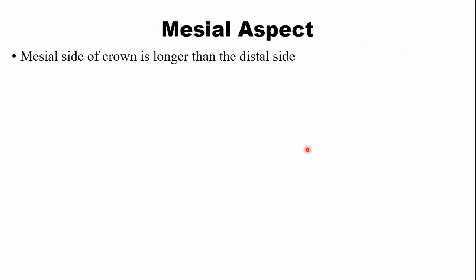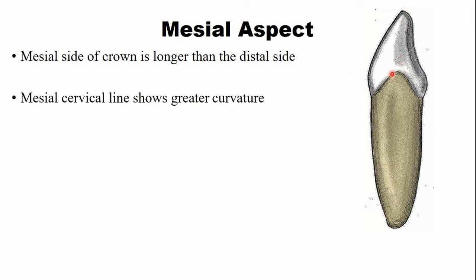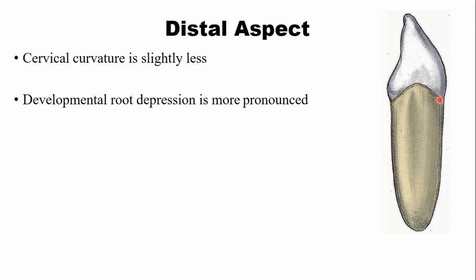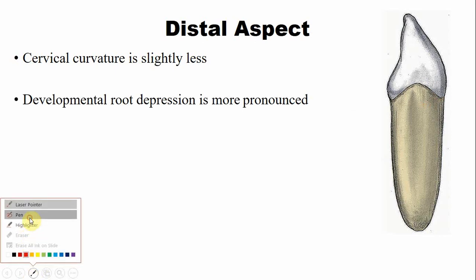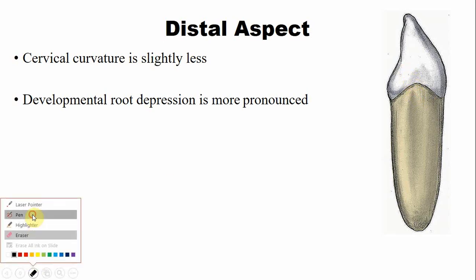From the mesial aspect, the mesial surface side of the crown is longer than the distal side. The crown appears longer from the mesial side because the height of the crown is greater on the mesial side. The mesial cervical line curvature is greater compared to the distal side of the same tooth — this is a general rule. From the distal aspect, the cervical line curvature is slightly less than on the mesial side. There is a developmental root depression on the root surface from the distal side, and this depression is more pronounced.